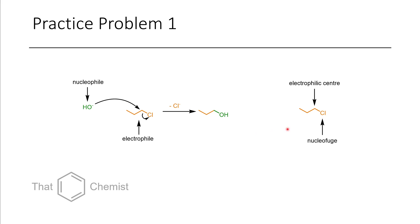Now if we look at the chloropropane, the carbon where the nucleophile attacks is the electrophilic center, as it's the center that's engaging in the reaction. And the nucleofuge is the chloride, which is the leaving group.